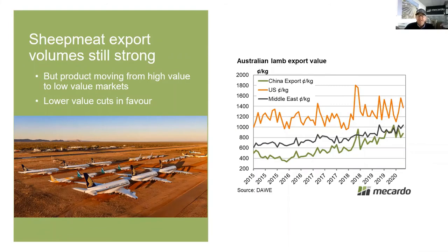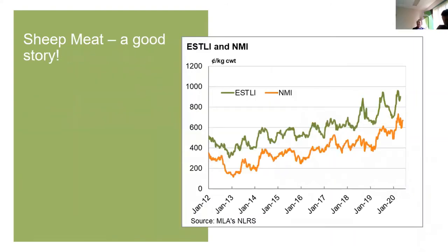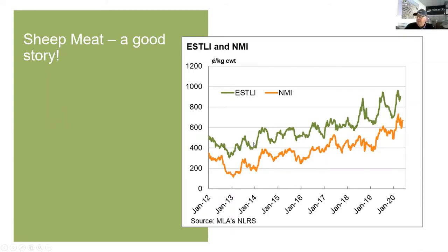Lamb exports are strong and lower value cuts are in favour. Looking at prices, it's a really good story for sheep meats and lamb — a trend where each year we've got a higher high and a higher low is really telling you that there are new markets and strong demand for those products.